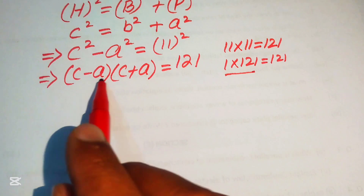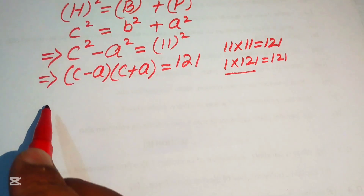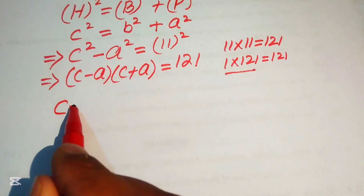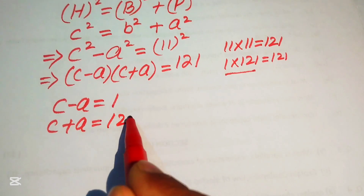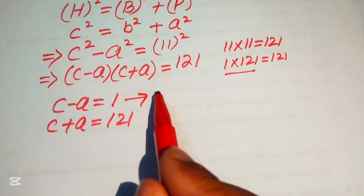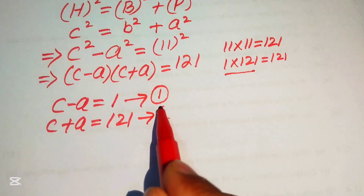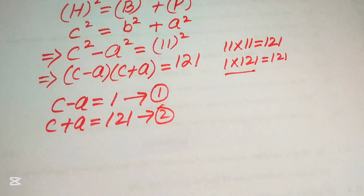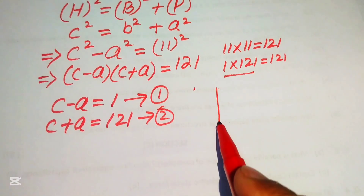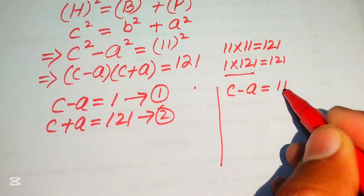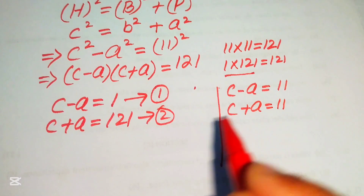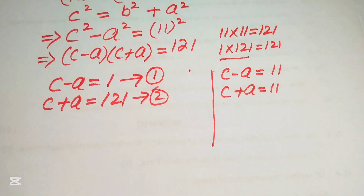We now create two cases by equating the factors. First case (1 × 121): c − a = 1 (equation 1) and c + a = 121 (equation 2). Second case (11 × 11): c − a = 11 and c + a = 11. Solving these two systems will give us the unknown side lengths, perimeter, and area.